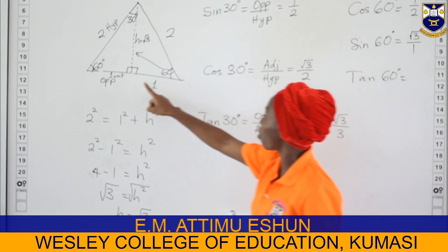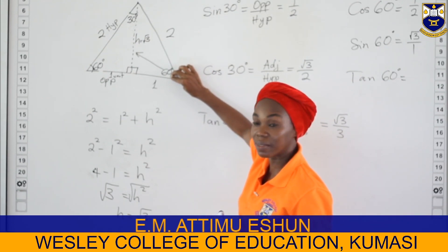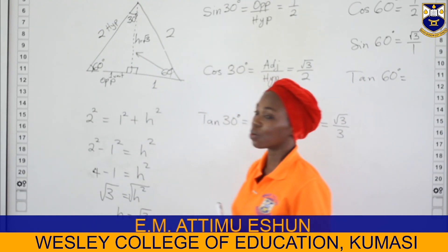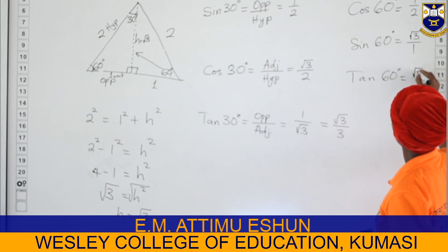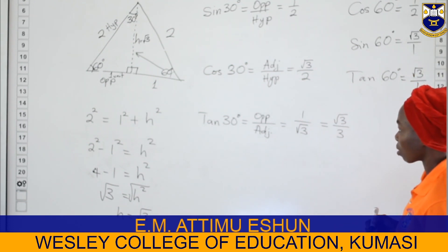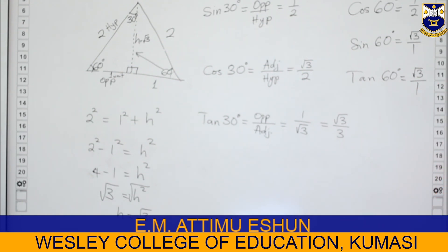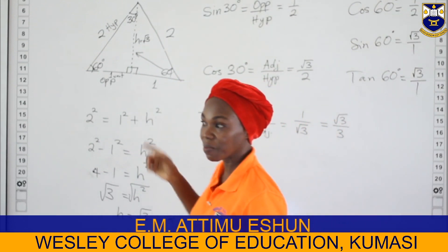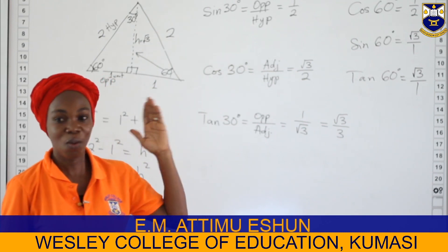For tan 60, the ratio is opposite divided by adjacent. With reference to angle 60, the opposite is root three and the adjacent is one, so tan 60 equals root three divided by one, which is root three. That gives us the trig ratios for sine 30, cos 30, sine 60, cos 60, tan 30, and tan 60.